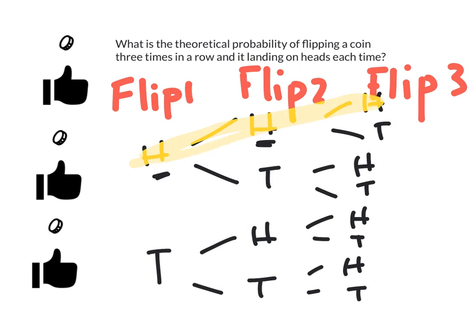If you look at the tree diagram, there's no other combination of you flipping heads, heads, heads. It goes heads, heads, tails, or heads, tails, heads, or heads, tails, tails. These are all the possible outcomes. So again, remember the total number of outcomes.